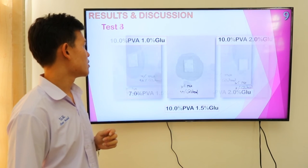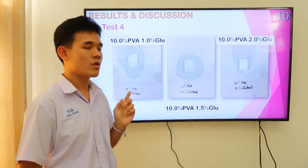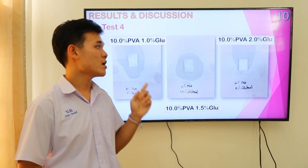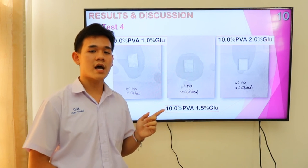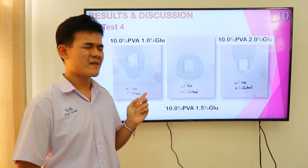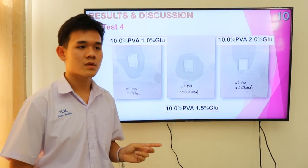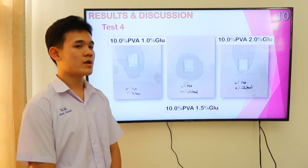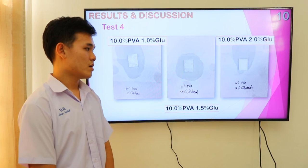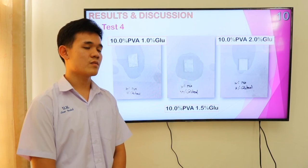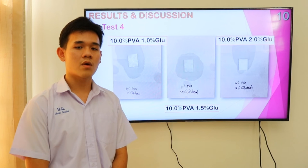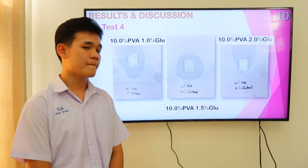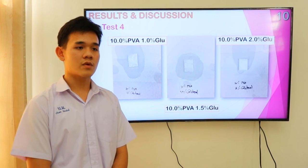Next, I use 10% polyvinyl alcohol with 1.5% glutaraldehyde, 10% polyvinyl alcohol with 1.5% glutaraldehyde, and 10% polyvinyl alcohol with 2% glutaraldehyde. From the results of the experiment, it was found that the membrane has high porosity and more stiffness than the 7% polyvinyl alcohol samples. If I increase the concentration of glutaraldehyde, it was found that the membrane has more stiffness.